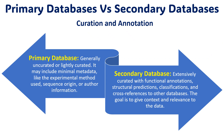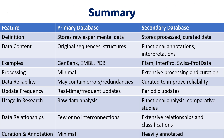Regarding curation and annotations: primary databases are generally uncurated or lightly curated, and may include minimal metadata like experimental methods, sequences, origin, and author information. Secondary databases are extensively curated, formatted, and better analyzed — processed data with functional annotations, structural predictions, and classifications. The goal is to give context and relevance to the data. This summarizes the differences between the primary and secondary databases.